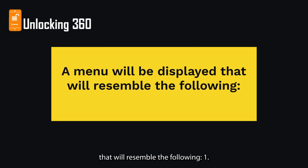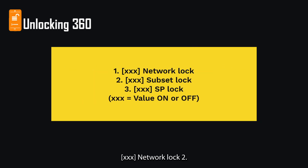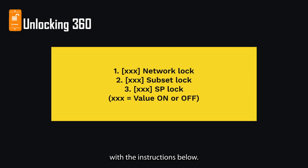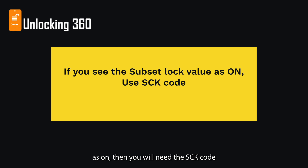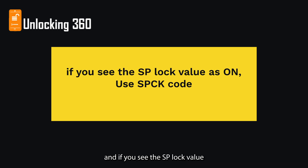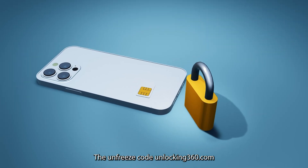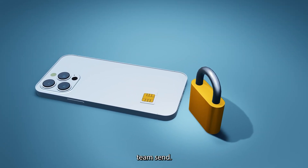A menu will be displayed resembling the following: 1. Network Lock, 2. Subset Lock, 3. SP Lock. If only the Network Lock is displayed as ON, you will only need to use the NCK code. If the Subset Lock value shows ON, you will need the SCK code. If the SP Lock value shows ON, you will need the SPCK code.